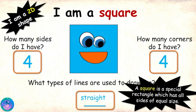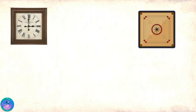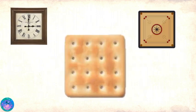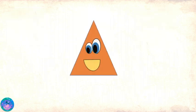Zoe, now you know me well. Can you identify some objects that have my shape? The clock in my room! My carom board! This cracker that I love! All of these are square! Awesome! Now you can meet the next shape!